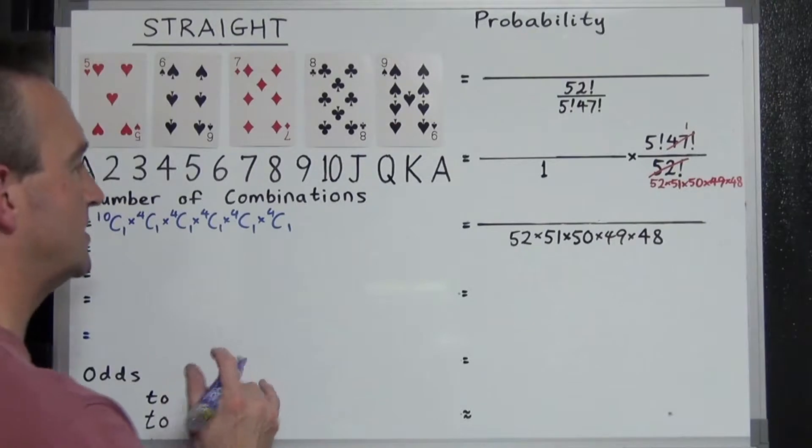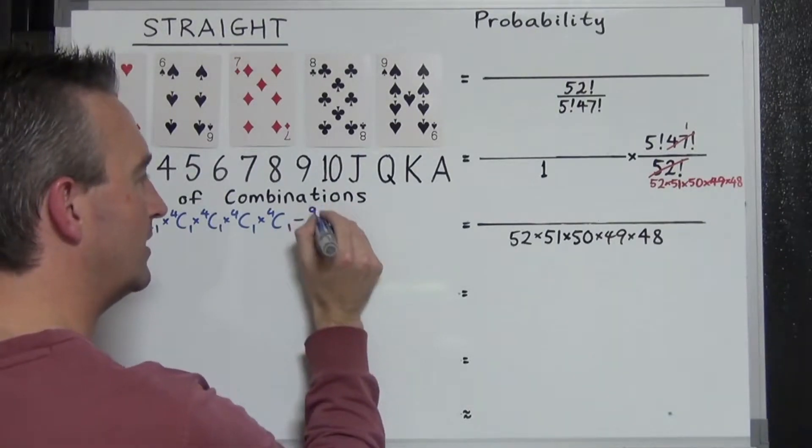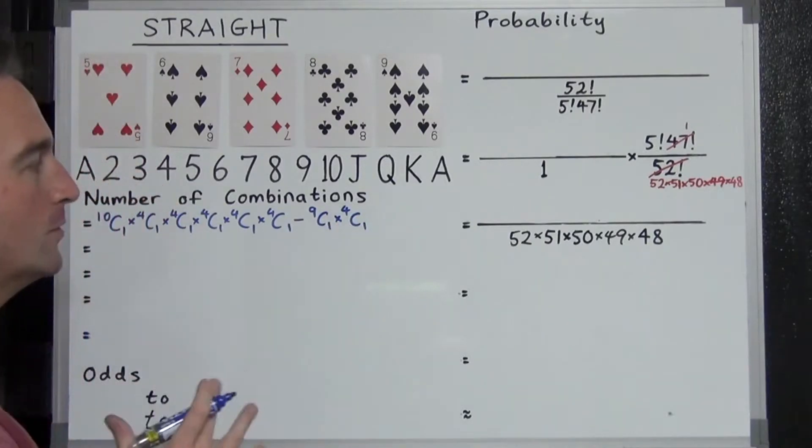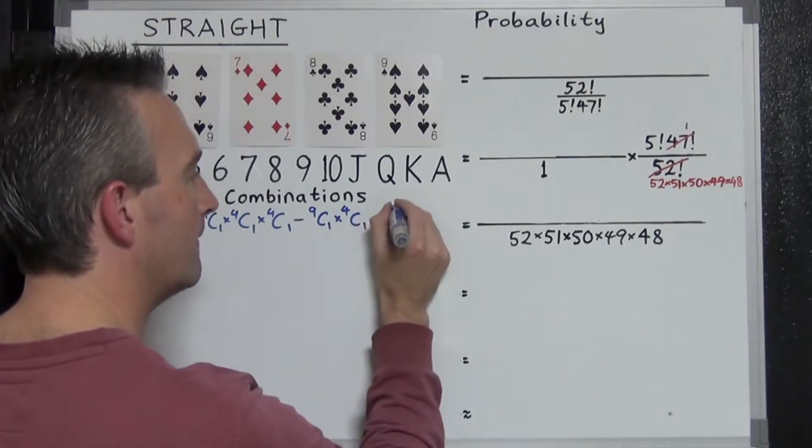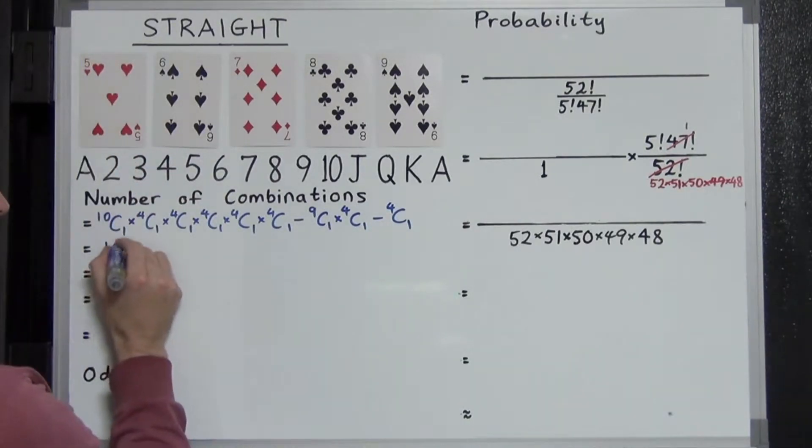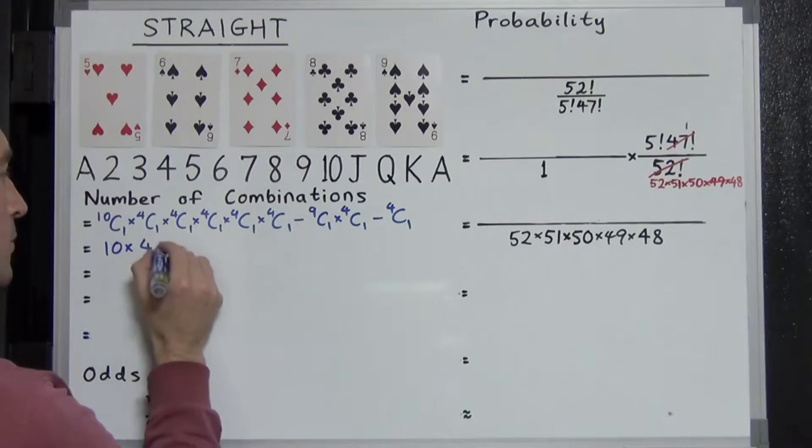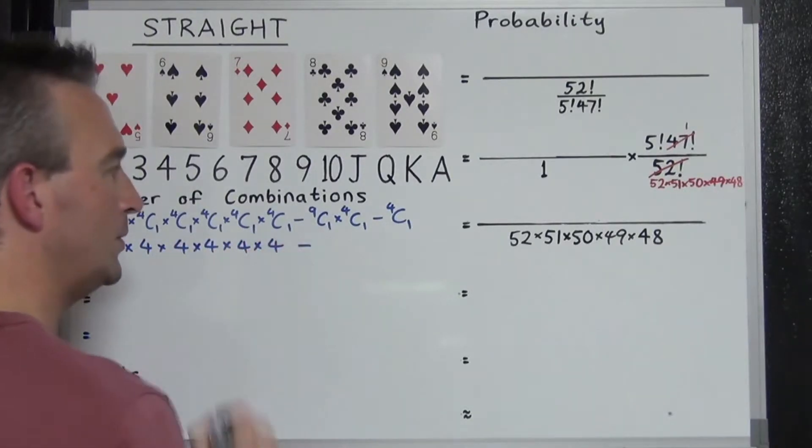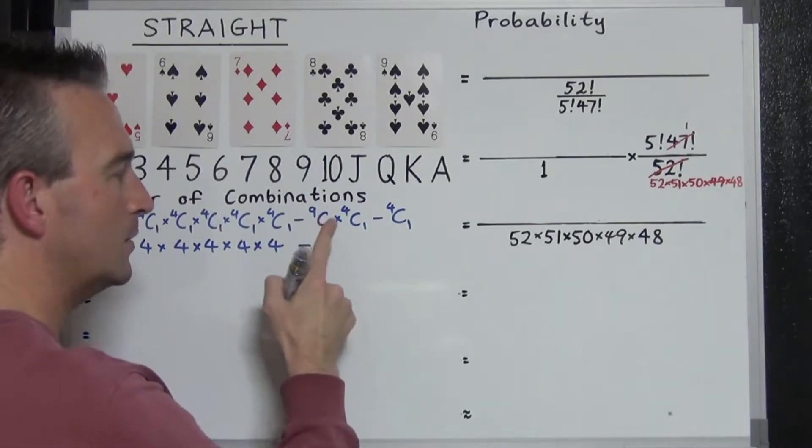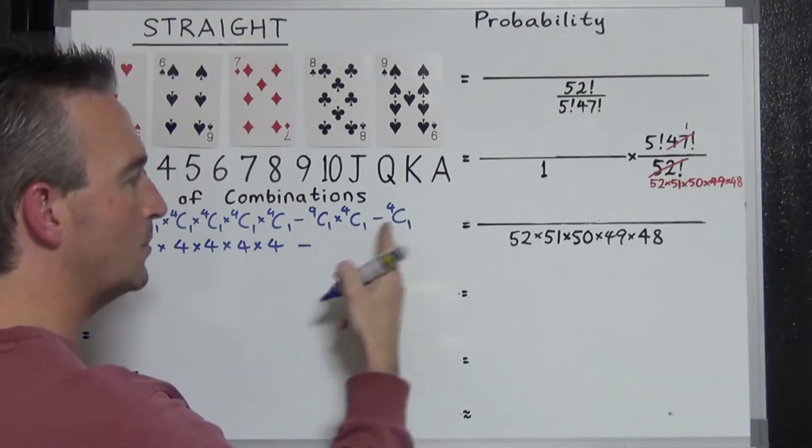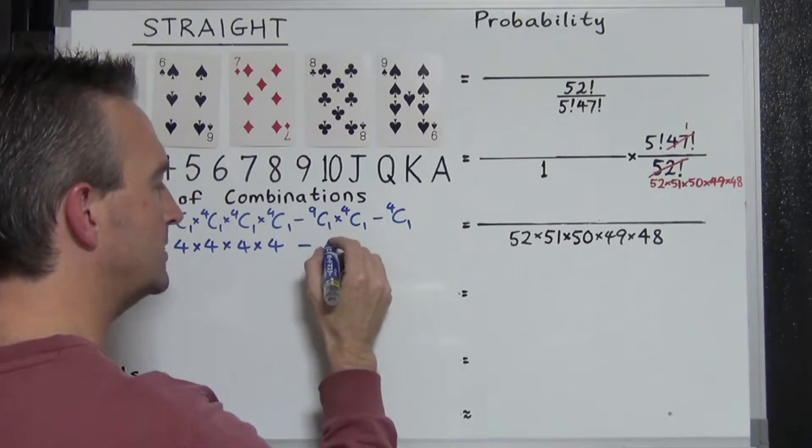So how many straight flushes are possible? Hopefully you've checked out our presentation. 9C1 times 4C1. And royal flushes, there are 4C1 royal flushes. Let's write this all numerically. 10C1 is 10. And then 4C1s are all four each. And then the number of straight flushes is 9 times 4, which is 36. And the number of royal flushes is 4.